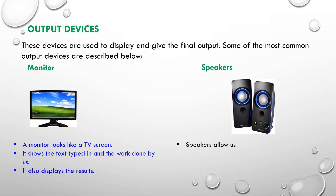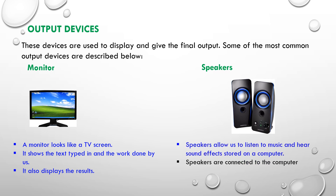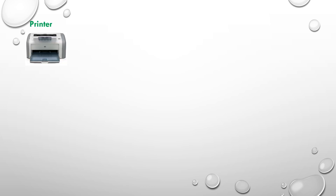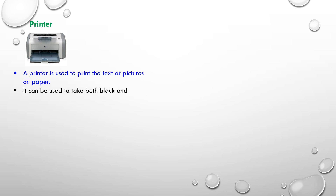Speakers allow us to listen to music and hear sound effects stored on a computer. Printer. A printer is used to print text or pictures on paper. It can be used to take both black and white or colored pictures. The printer copy on paper is called the hard copy.